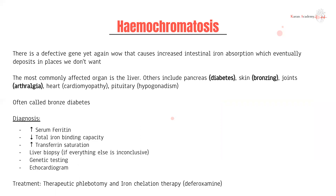Lastly, hemochromatosis — a genetic defect that causes increased intestinal iron absorption. There is normally a protein that controls how much iron you absorb; with this gene defect you lose that control and end up absorbing excessive iron. Your body can't cope, so you end up with high levels of iron in your bloodstream that deposit in places you don't want. The most commonly affected organ is the liver.